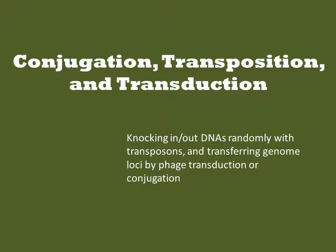Conjugation, transposition, and transduction are old-school ways of performing genome manipulation that predate recombinant DNA methods. Despite their age, they're still very commonly used techniques. Conjugation involves the transfer of DNA from one cell to another through mating. Transduction involves the transfer of DNA from one cell to another via a phage particle intermediate. Transposition is the process of randomly inserting a DNA into the genome.